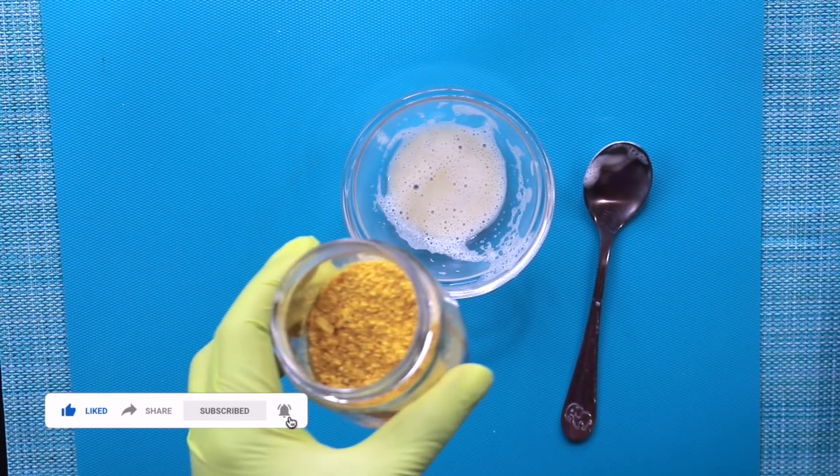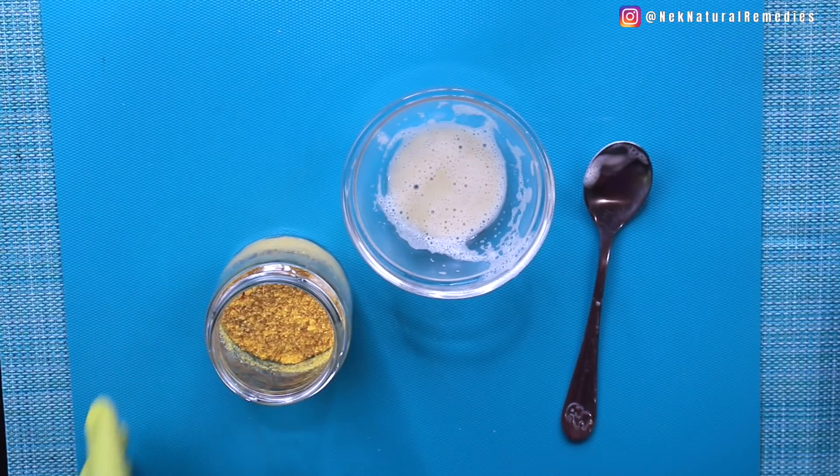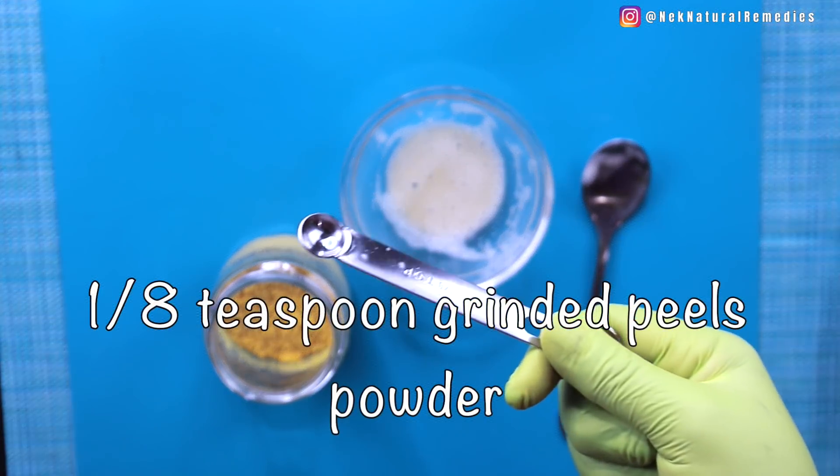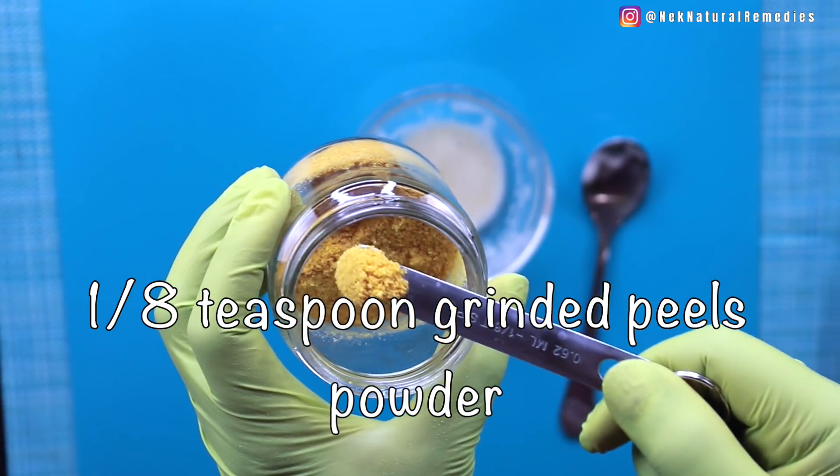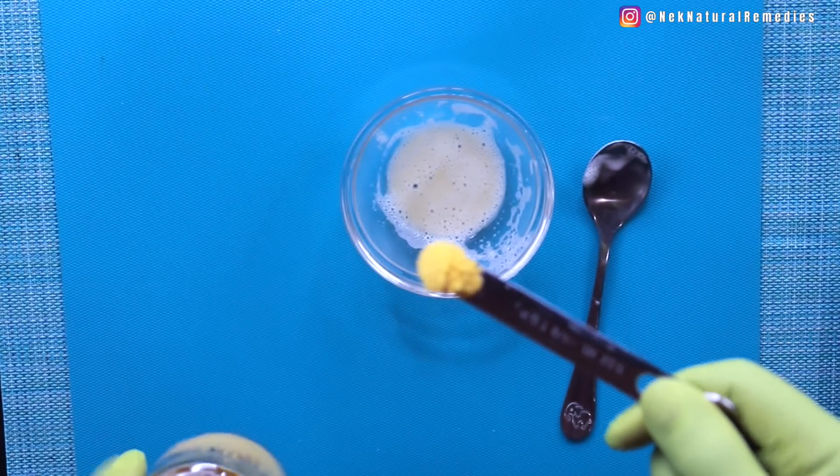one-eighth teaspoon of the lemon and orange peel powder. This is one-eighth teaspoon, so you take it and add it to the bowl of potato starch.